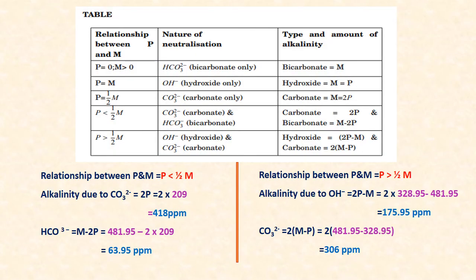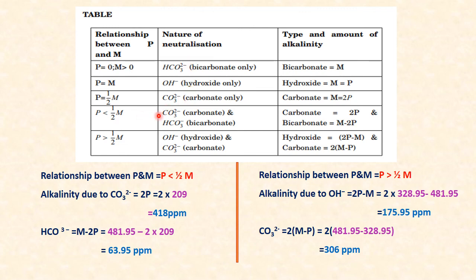Here is a tabular summary: if P = 0 and M > 0, only bicarbonate is present; if P = M, only hydroxide is present; if P = M/2, only carbonate is present. In the lab, the general conditions given are either P < M/2 or P > M/2, which represent combination alkalinity cases.